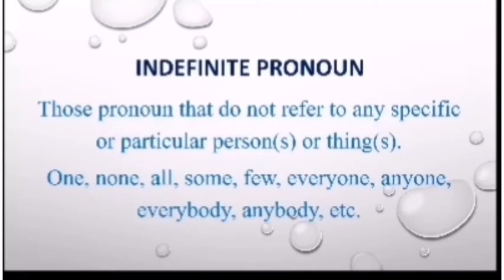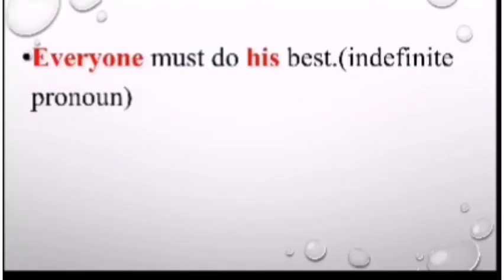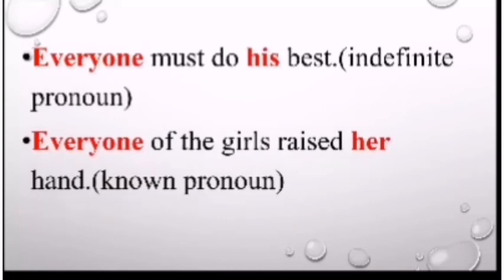Now let's start indefinite pronoun. Indefinite pronouns are those pronouns that do not refer to any specific or particular person or thing. Examples are: one, none, all, some, few, everyone, anyone, everybody, anybody, etc. We need to take care of certain rules while using these. If we have an indefinite pronoun which doesn't have a specific gender, we use the masculine pronoun for referring to it — for example, 'everyone' takes 'his.' However, if we have a specific gender, like 'everyone of the girls,' we will use accordingly.